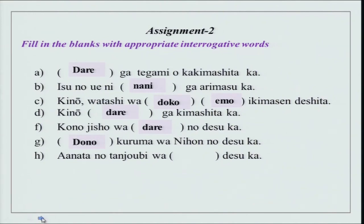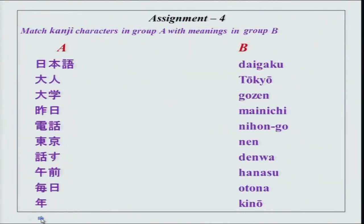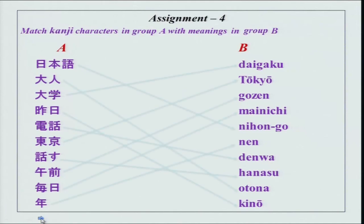Dono kuruma wa nihon no desu ka — with dono and a noun, it is a choice between two, meaning 'which one of these two.' Anata no tanjobi wa itsu desu ka — please remember, tanjobi is always itsu and senen gappi is nan. Now you have to match the kanjis: kanji is given in the left column A and you have the words in roman in column B. I hope everything was correct.